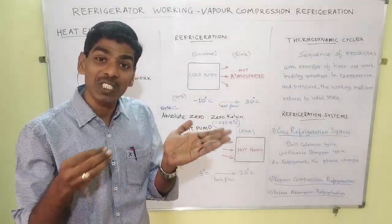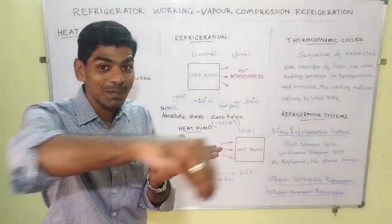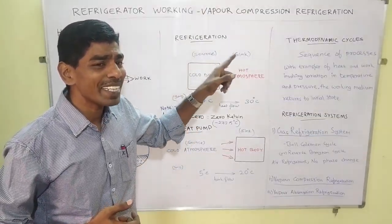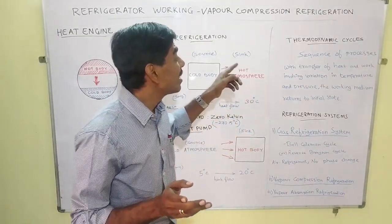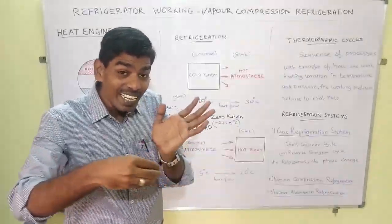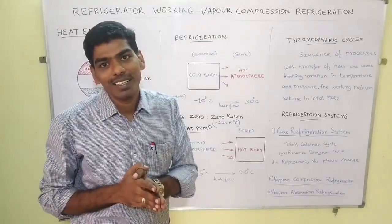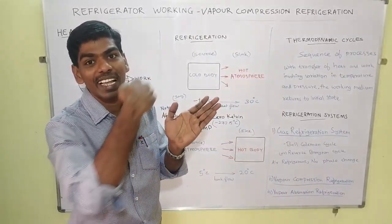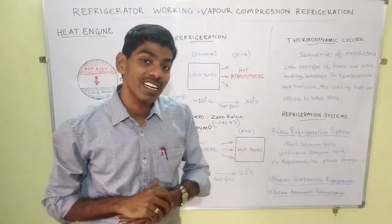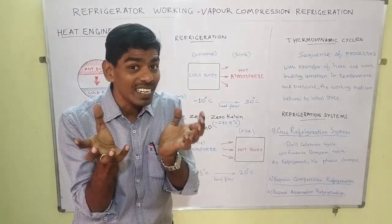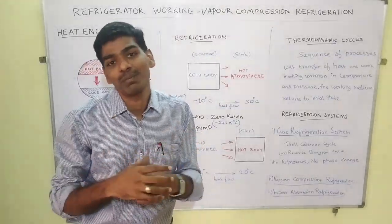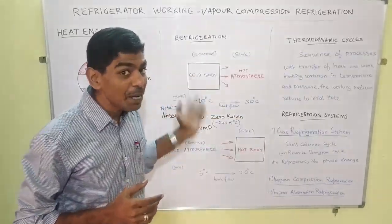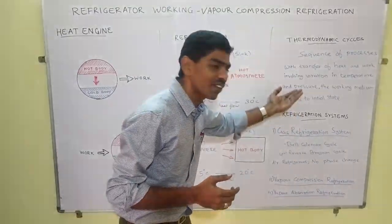This is possible with the help of a refrigerant, which stays within the system. To achieve that, we need a cyclic process. Thermodynamic cycles are sequences of processes where transfer of heat and work involving temperature and pressure returns the medium to its initial state, thereby creating a cyclic process. Based on these thermodynamic cycles, various refrigeration systems have been created.